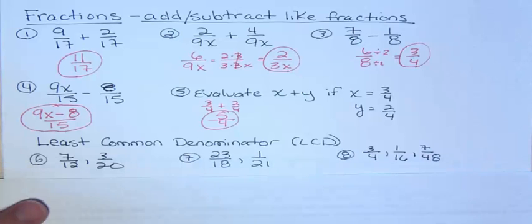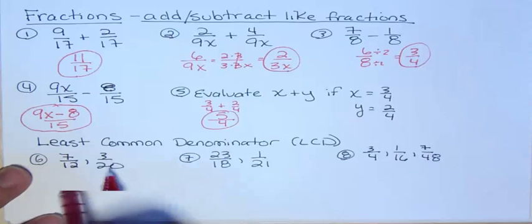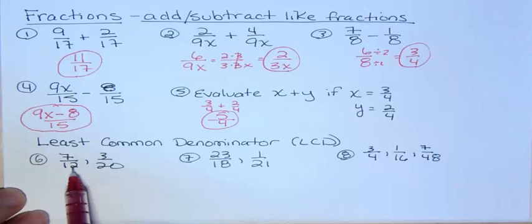The least common denominator means the smallest number that both the denominators would go into. So when I'm looking at something like number 6, 7 twelfths and 3 twentieths, what's the smallest number that they will both go into? There's a lot of different ways to find this. But what I would suggest is you just count by this bigger number until you hit something that the smaller number goes into.